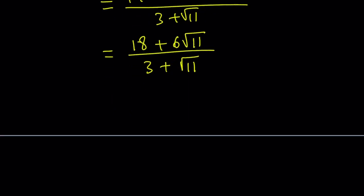20 minus 2 is 18. So the numerator becomes 18 plus 6 root 11 divided by 3 plus root 11. Hopefully, you see what I see here. We can factor out a 6 in the numerator, and we have 3 plus root 11 inside the parentheses. And guess what?